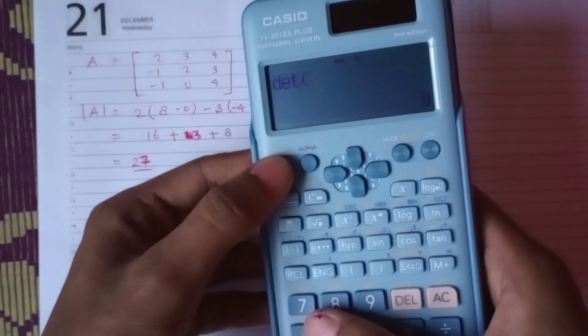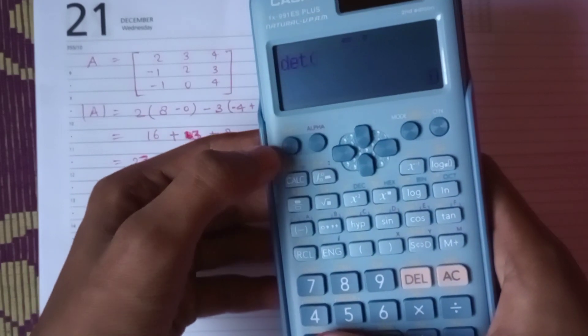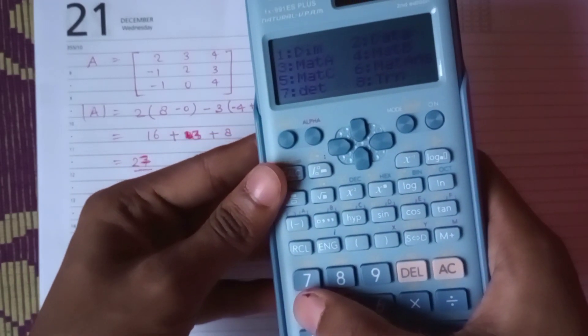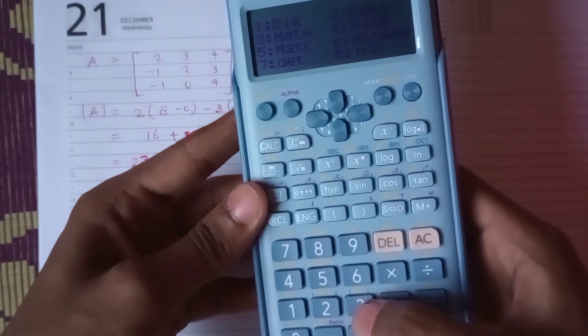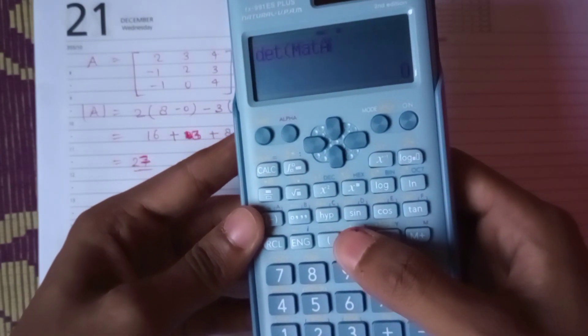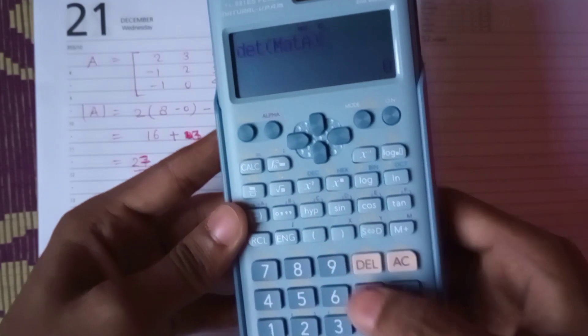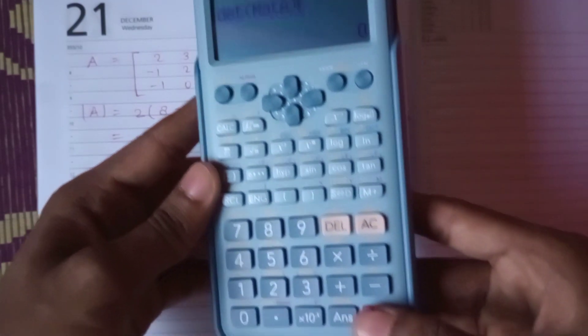In the calculator, just press four again with Shift, and choose the matrix. I have chosen A because I put the matrix in A mode. Press the closing bracket.